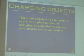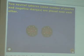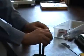At this stage it didn't show them coming back afterwards, but it does say we're up to charging objects. The same principle can be used to explain the phenomenon of charging by induction. Go to the next card to see an animation. So in this case, what happens if we've got Rachel back here again? Two domes like this, neutral to begin with. Did you test that out? Does it work?